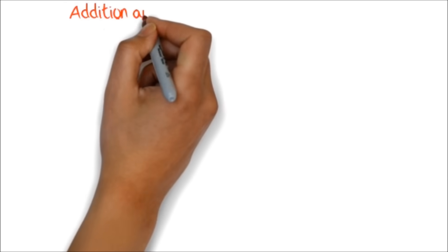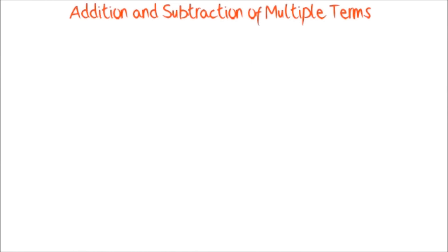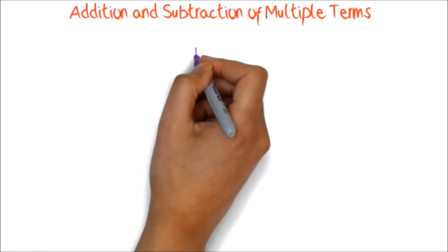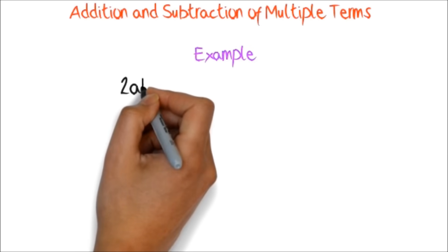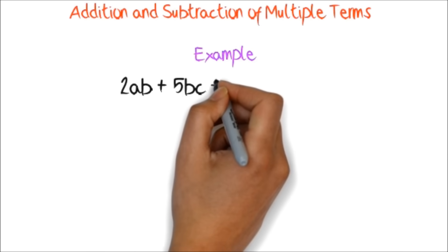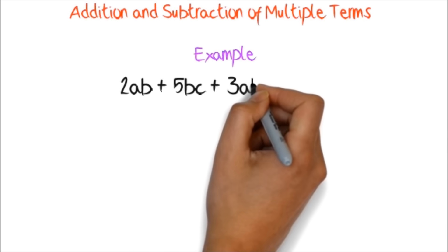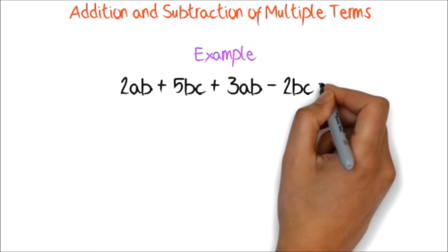Addition and subtraction of multiple terms. Like the way we added multiple numbers in basic math, we might have to add multiple terms in algebra. Let's try this. 2ab plus 5bc plus 3ab minus 2bc.